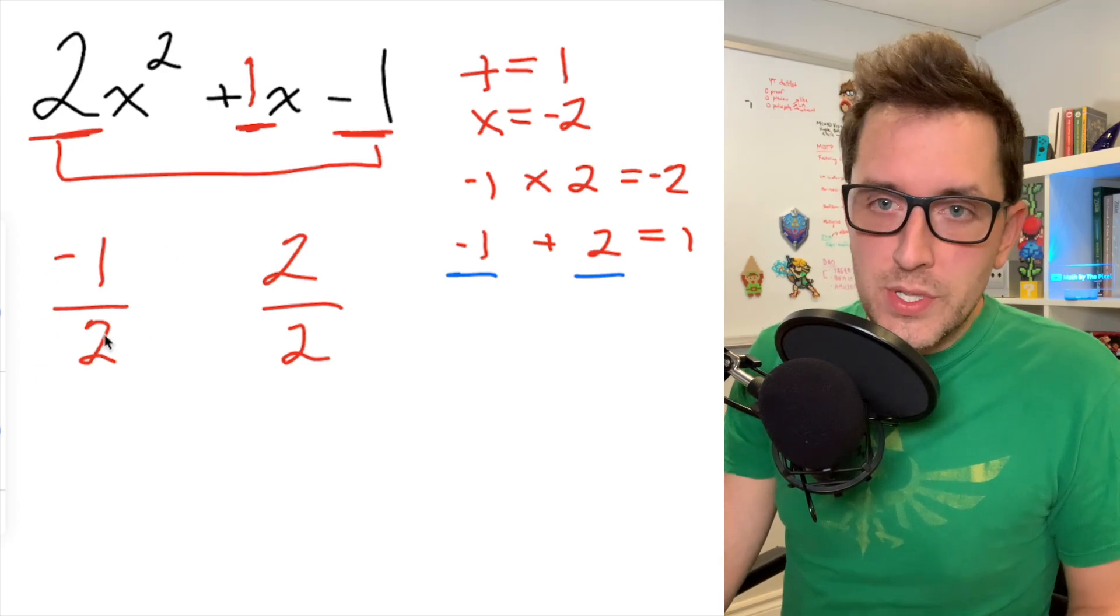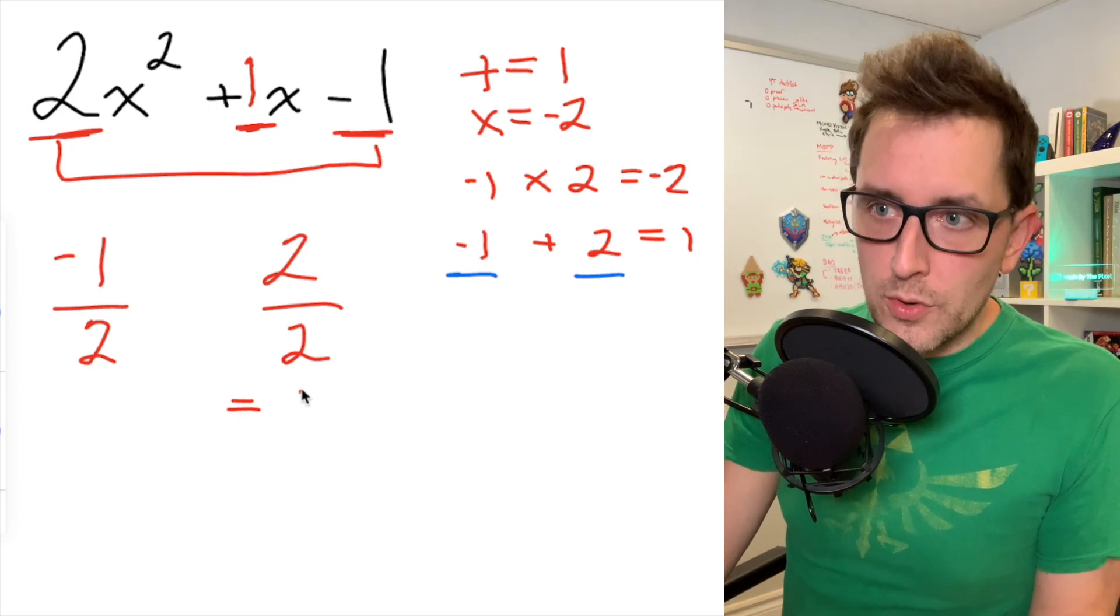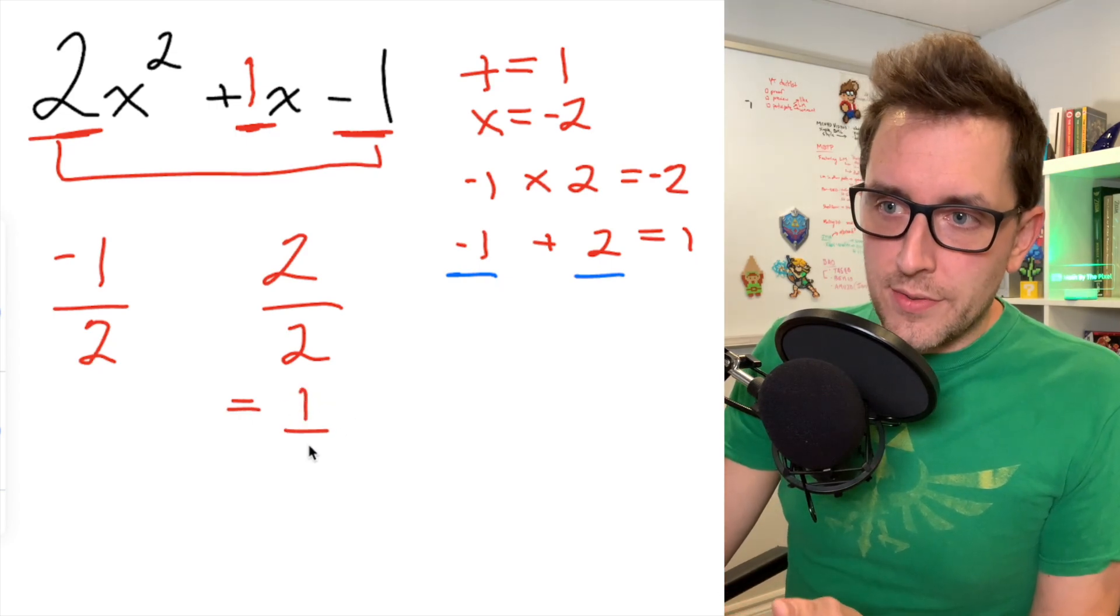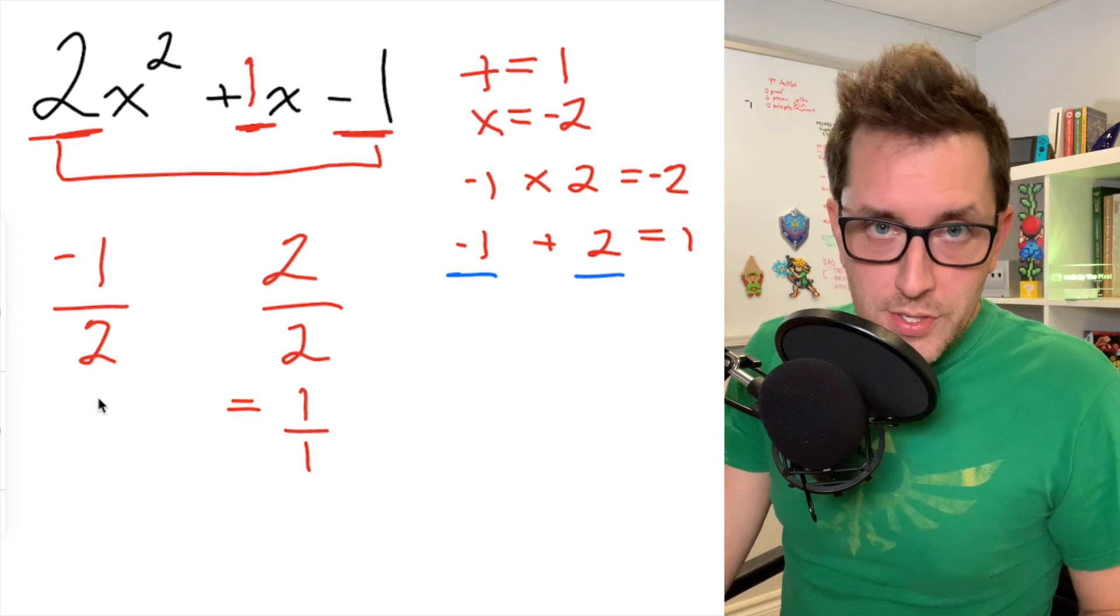We're going to look at our fractions and we're going to ask ourselves, are these reduced to lowest terms? The first fraction is reduced to lowest terms. However, the second fraction, 2 over 2, I know I can reduce that fraction. I can reduce that to 1, but I want to keep it as a fraction. So I'm just going to write it as 1 over 1. I've got two simplified fractions in lowest terms.